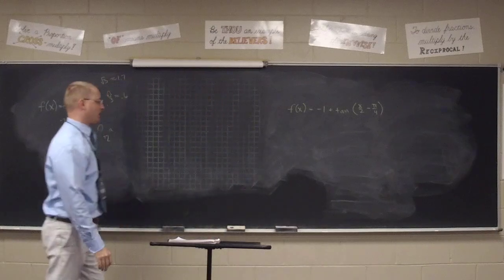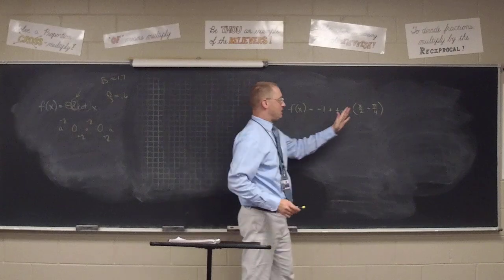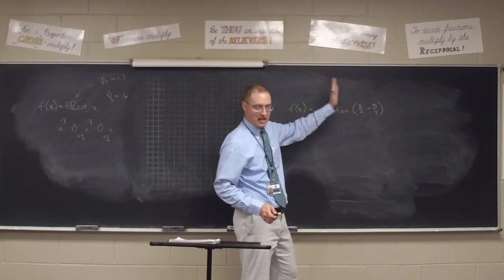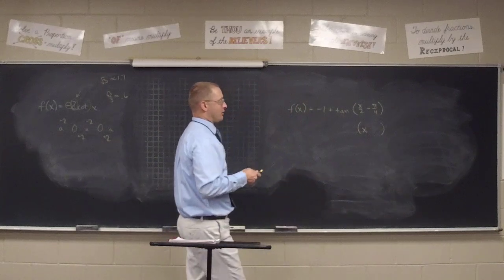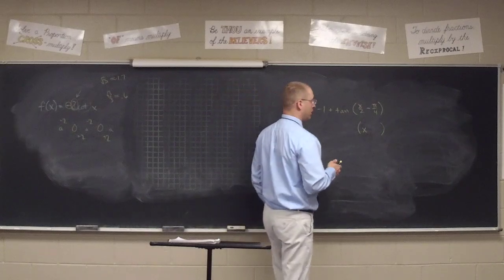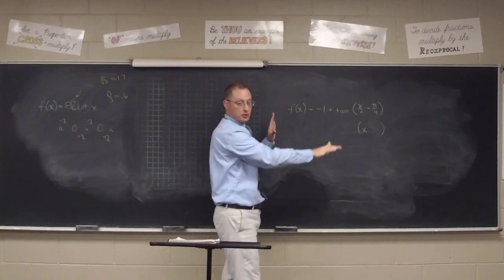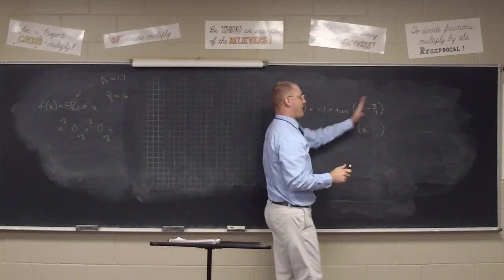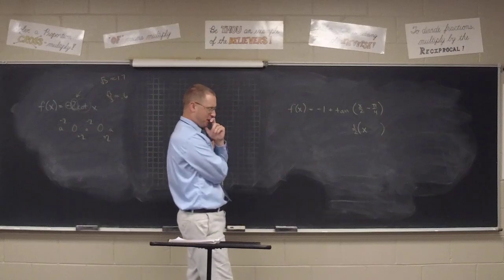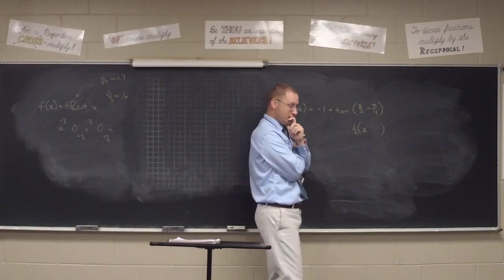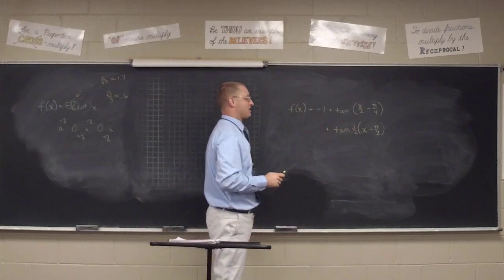Before analyzing, we need to simplify what's in the parentheses — the x must be by itself. Right now the x has a one-half with it, so we factor out the one-half. When you pull a half out of x/2 you get x; when you pull a half out of -π/4 you get -π/2. So we end up with -1 + tan(½·(x - π/2)). The negative one is still out front.